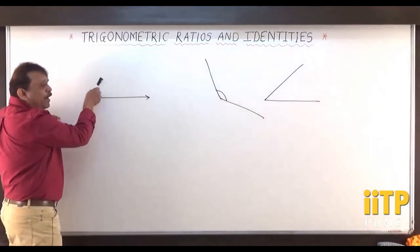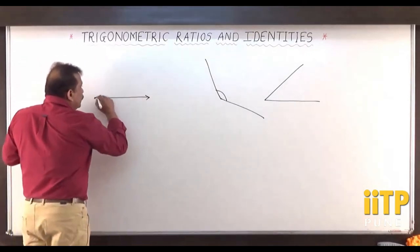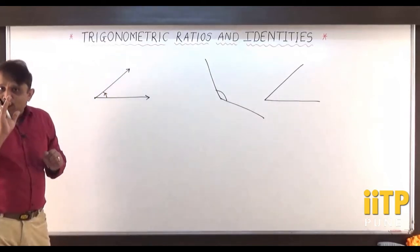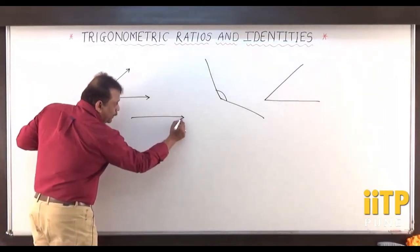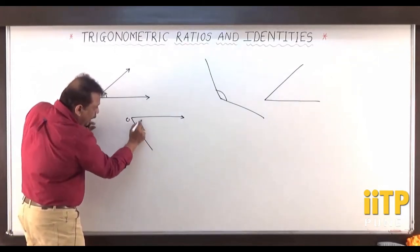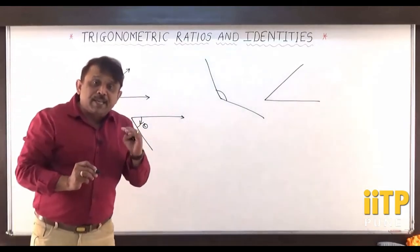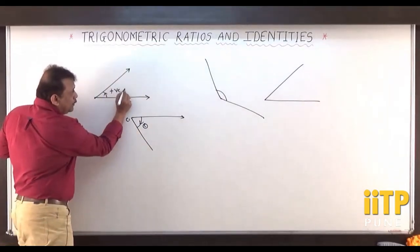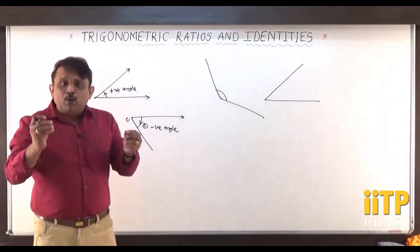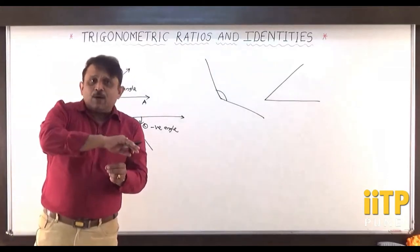If we measure the angle in the anti-clockwise direction, that angle is taken as a positive angle. So rotation in anti-clockwise direction gives a positive angle. Similarly, if I rotate this ray about point O in the clockwise direction, then I get an angle theta in the clockwise direction, which is regarded as a negative angle.